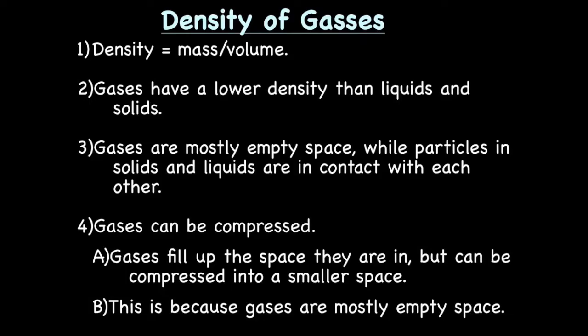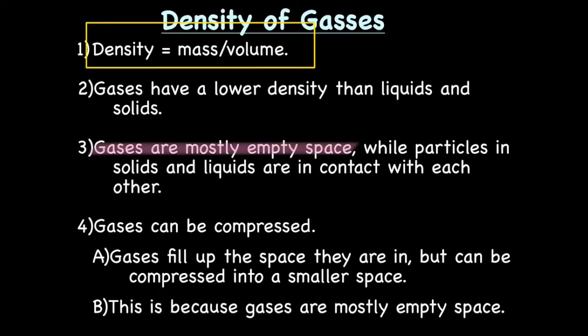The density of gases: the formula for density is mass divided by volume. Density looks at the relationship between how much something weighs relative to the volume — the amount of space it takes up. Something very dense could be very small but heavy; something not very dense could be very large but light. Gases have a lower density than either liquids or solids, because gases are mostly empty space — the gas molecules are spread out as far as they can go, which is not true of the molecules making up solids and liquids.